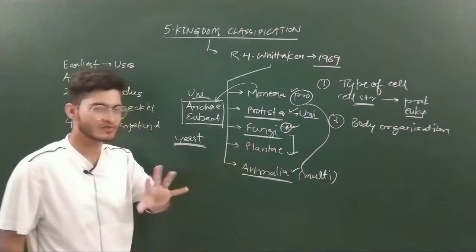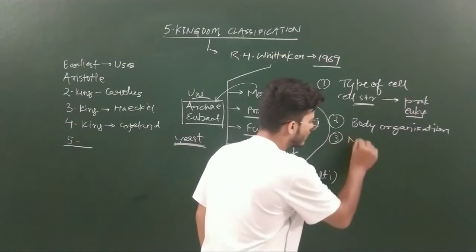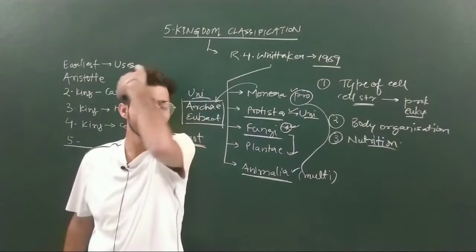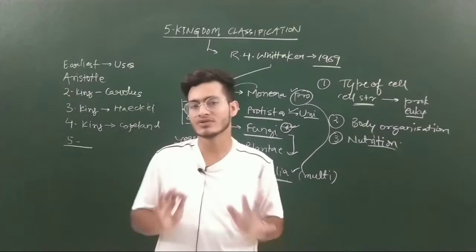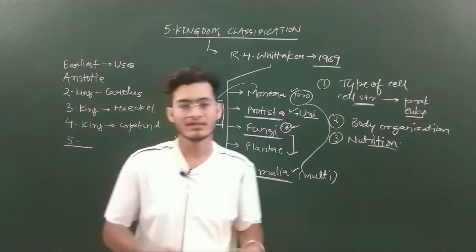The third character is mode of nutrition - whether they can synthesize their own food or not. In Monera and Protista, some of them can synthesize their own food, some cannot. Plantae shows photosynthesis so they can obviously synthesize their own food.